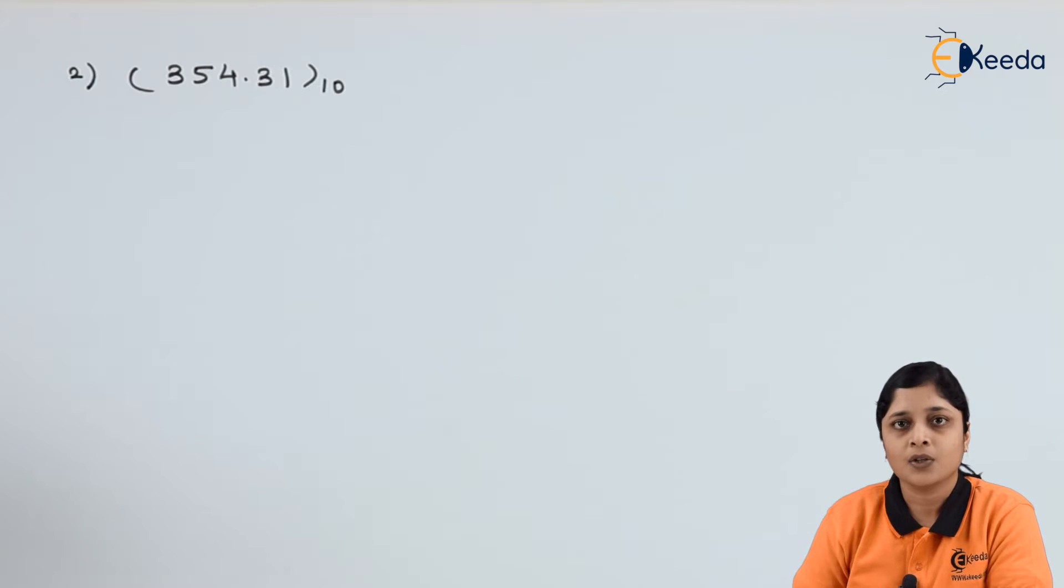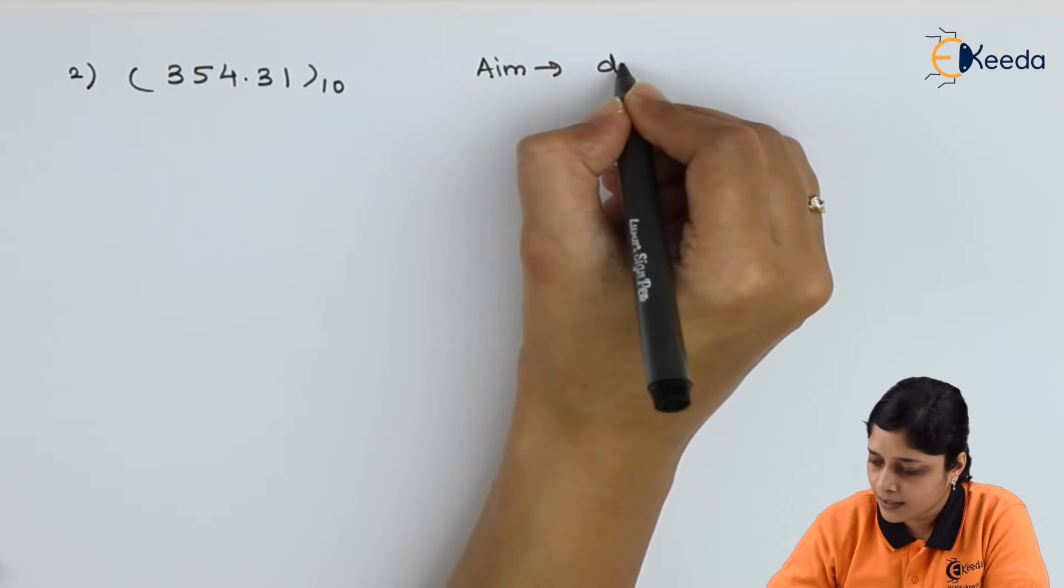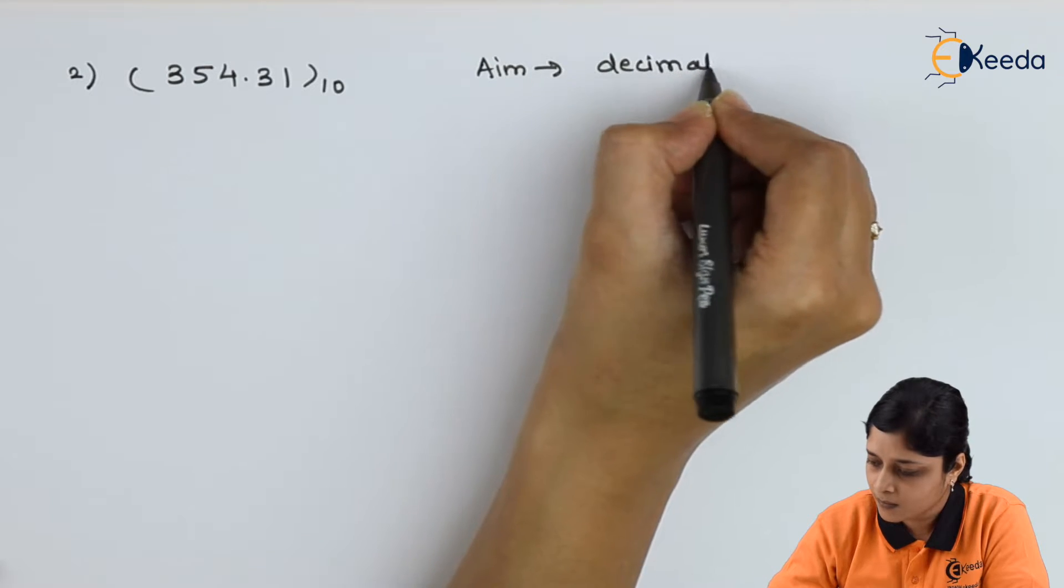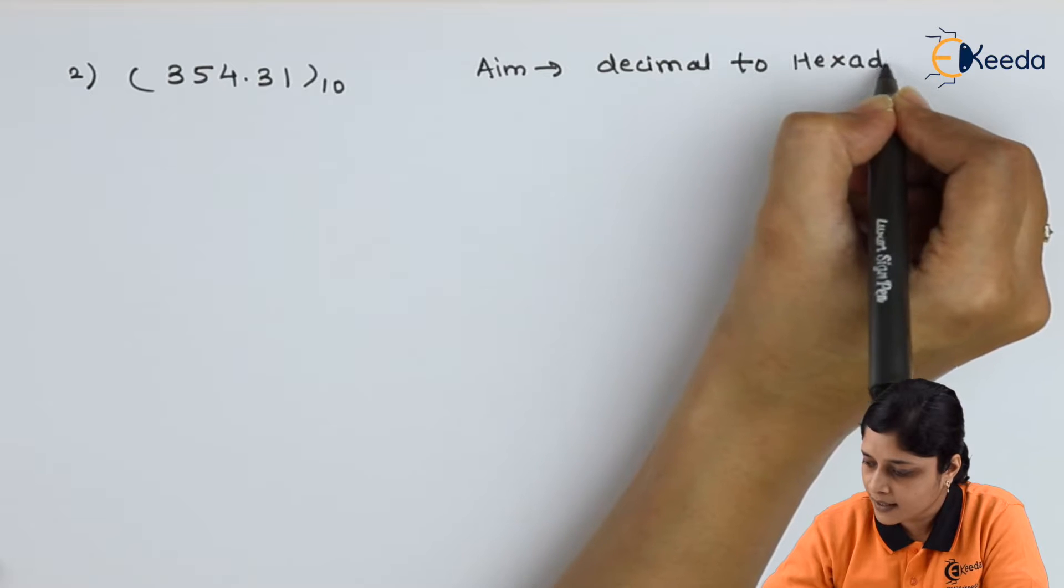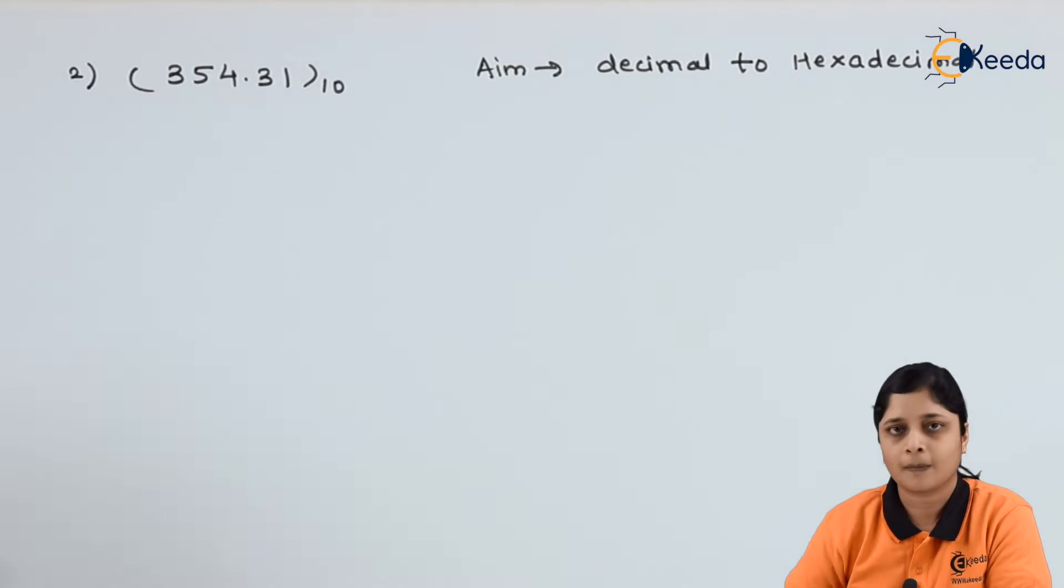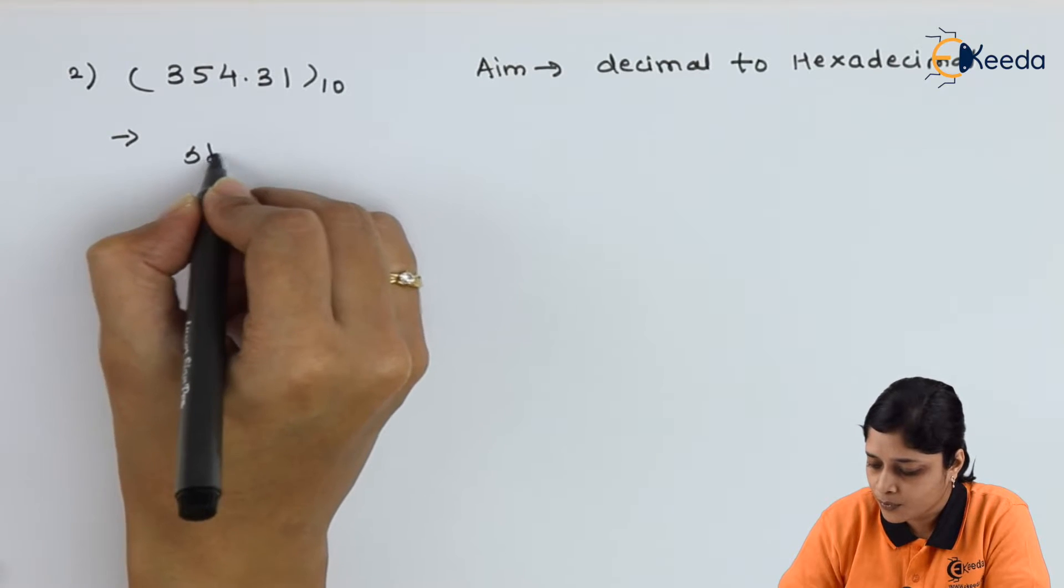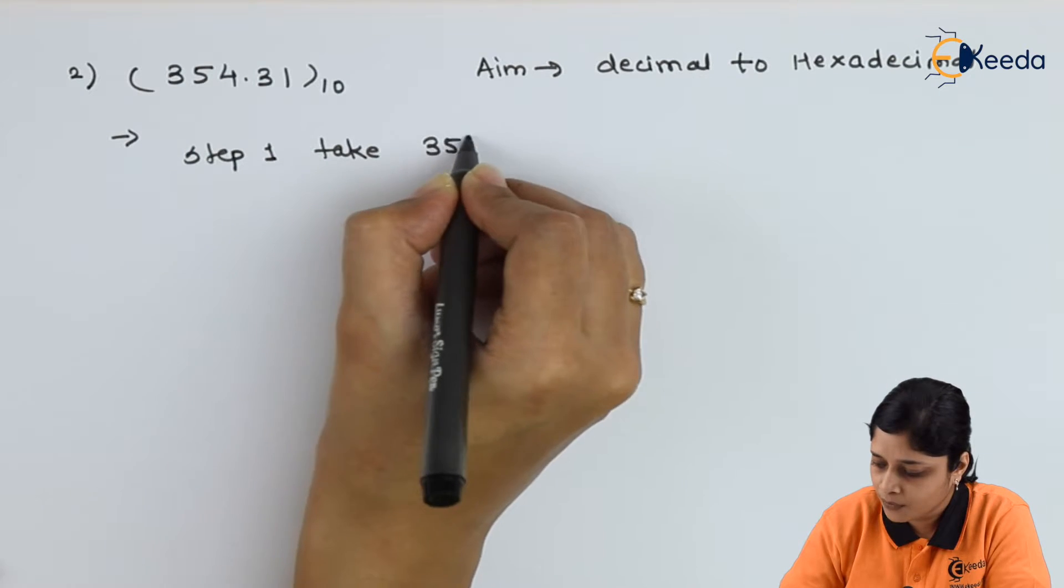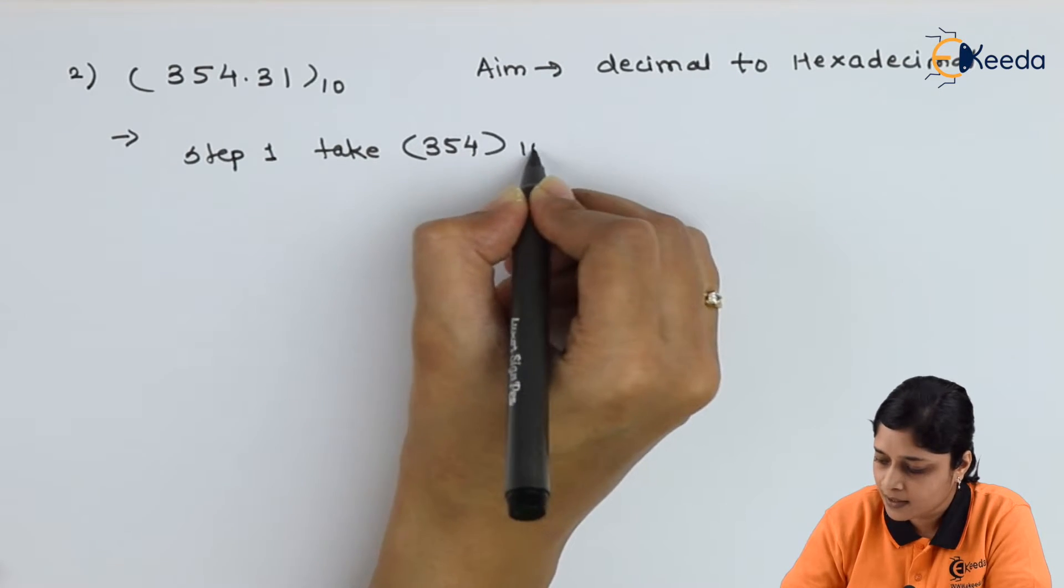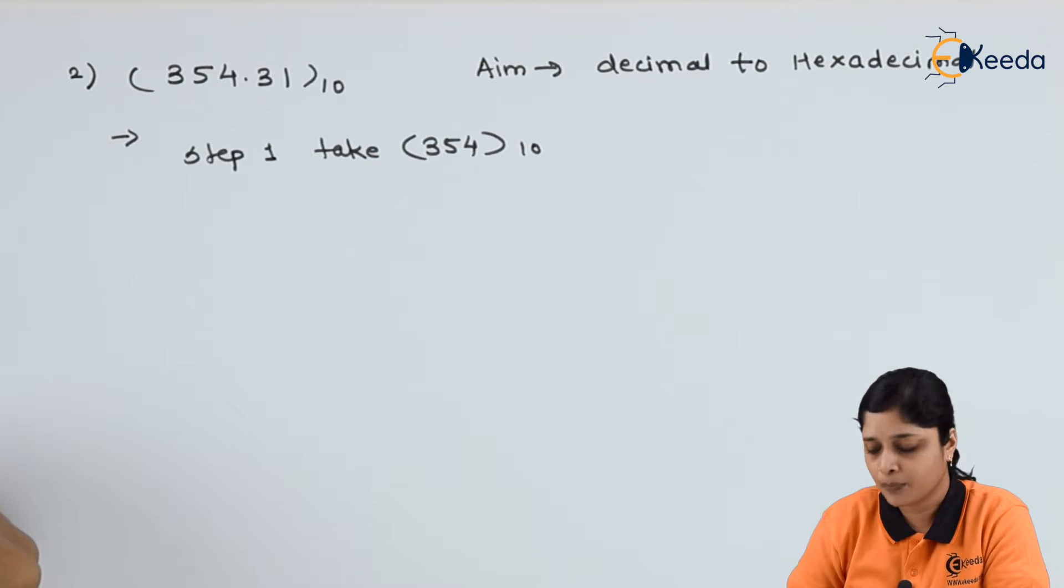Your aim is to convert decimal number to hexadecimal number. In this example, take 354. Step 1: take 354 to the base 10, solve it by successive division method approach.